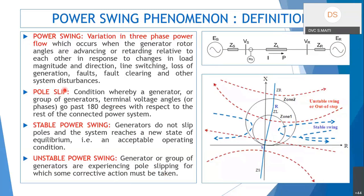Pole slip is a term used when a generator or group of generators has terminal voltage angles that go past 180 degrees apart with respect to the rest of the connected power system. In the R-X plane, stable swings come in and return back without crossing the negative resistance axis.